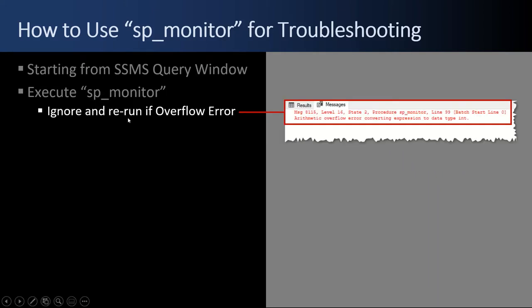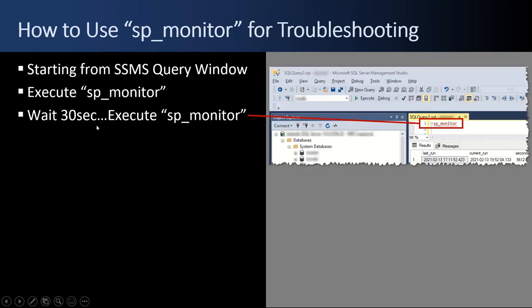When you do so, you might get a red error — 'procedure SP_Monitor, arithmetic overflow.' If that happens, don't worry about it. All that means is that the last time SP_Monitor was run was so long ago that the number of seconds is greater than what an integer can handle. If you get the error, just run it again — no big deal. Once that's out of the way, you execute SP_Monitor, wait 30 seconds, 60 seconds, or whatever interval, and then execute it again.